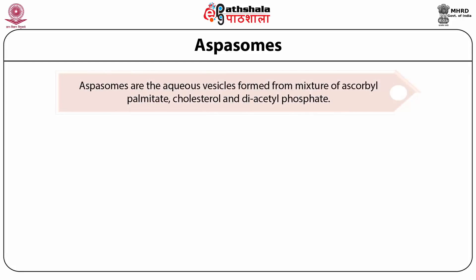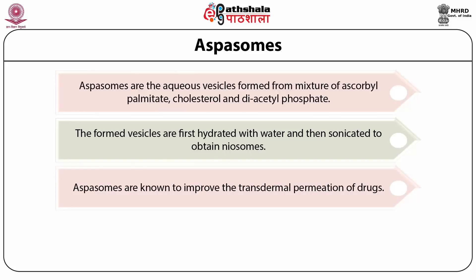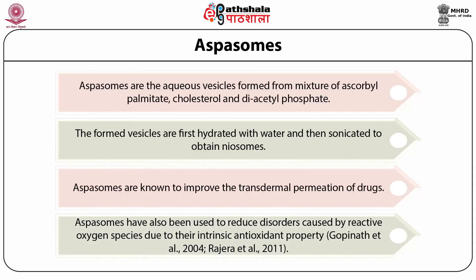Aspasomes are another type of neosomes which are aqueous vesicles formed from a mixture of ascorbyl palmitate. Like neosomes, they also consist of cholesterol and a charge inducer like diacetyl phosphate. Aspasomes are first hydrated with water and then sonicated to obtain the vesicles. They are specially used to improve the transdermal permeation of drug and have also been used to reduce disorders caused by reactive oxygen species due to their intrinsic antioxidant property.